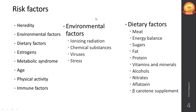Vitamins and minerals - people deficient in vitamin C have higher risk of oropharyngeal, oral, stomach, and esophageal cancer. People with low beta-carotene and carotenoid levels in their blood have higher risk of lung cancer. Various vitamin and mineral deficiencies are associated with different kinds of cancer.